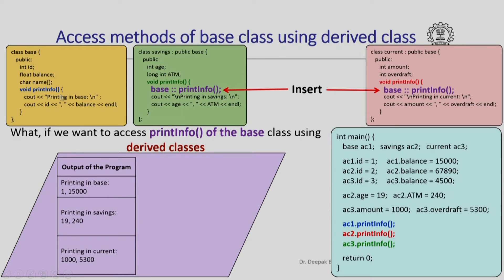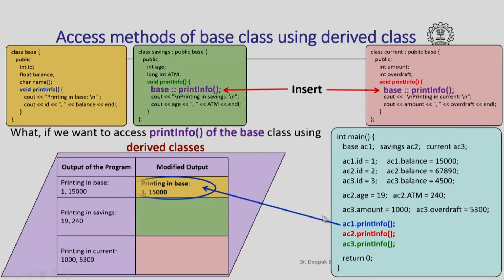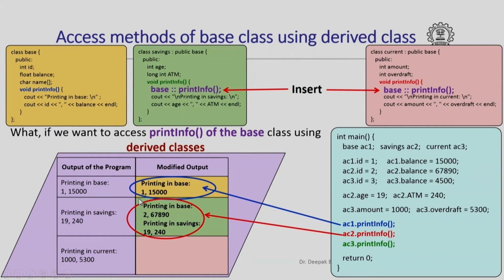Let us see what gets printed when these three statements are executed. The first one will still print the same thing as before. In the second case, it will first invoke print info of the base class, so it will print 'printing in base' and then print the values of ID and balance of AC2, which are 2 and 67890. Then it will also print 'printing in savings' and the values of the data members age and ATM of AC2, which are 19 and 240.